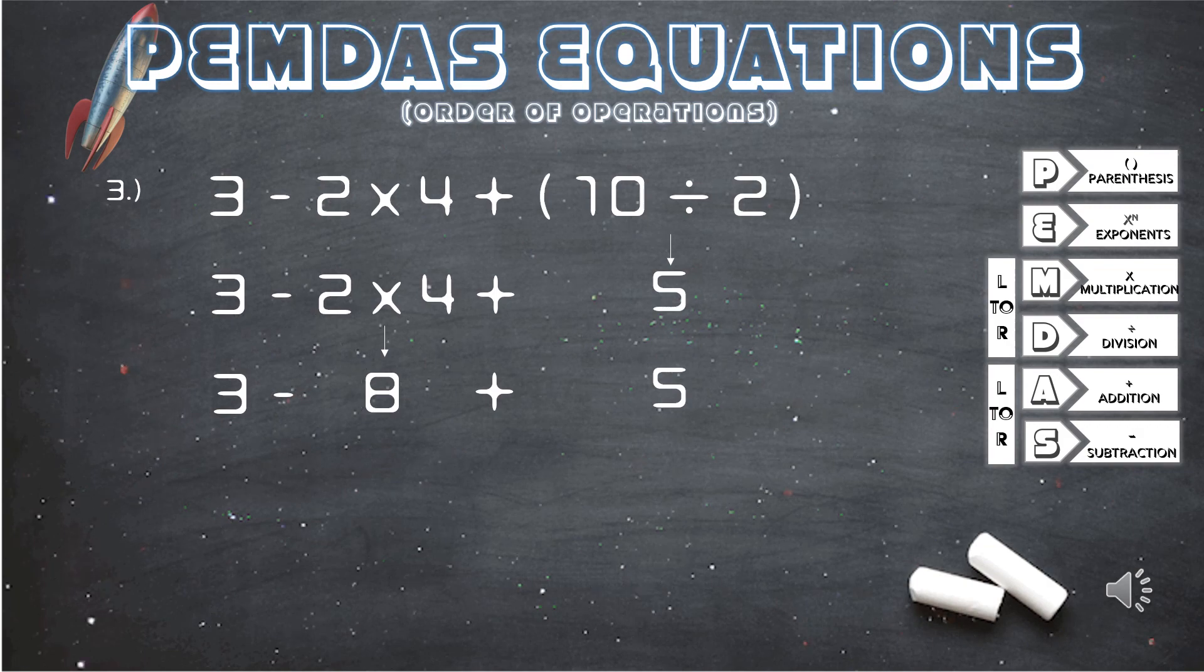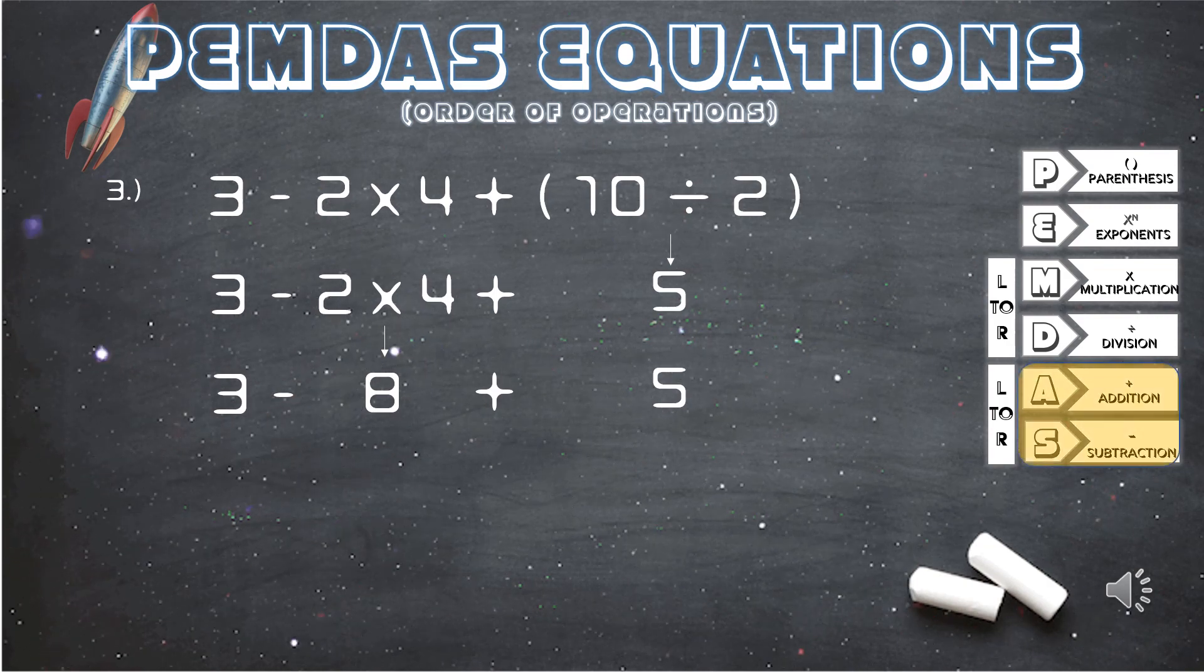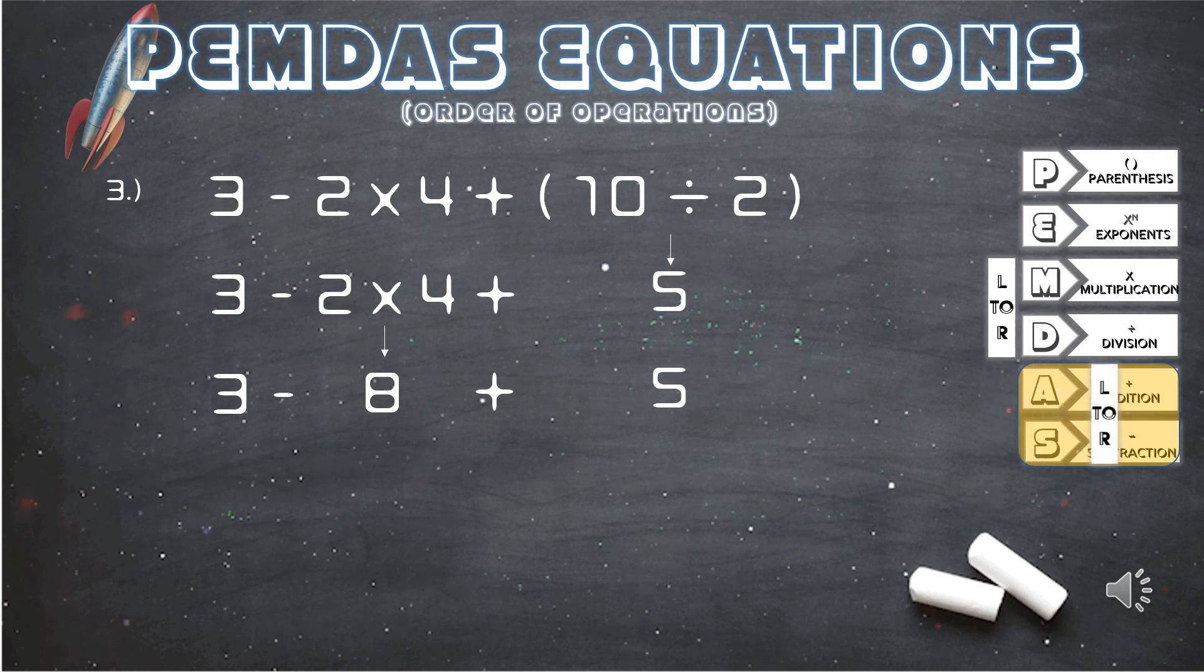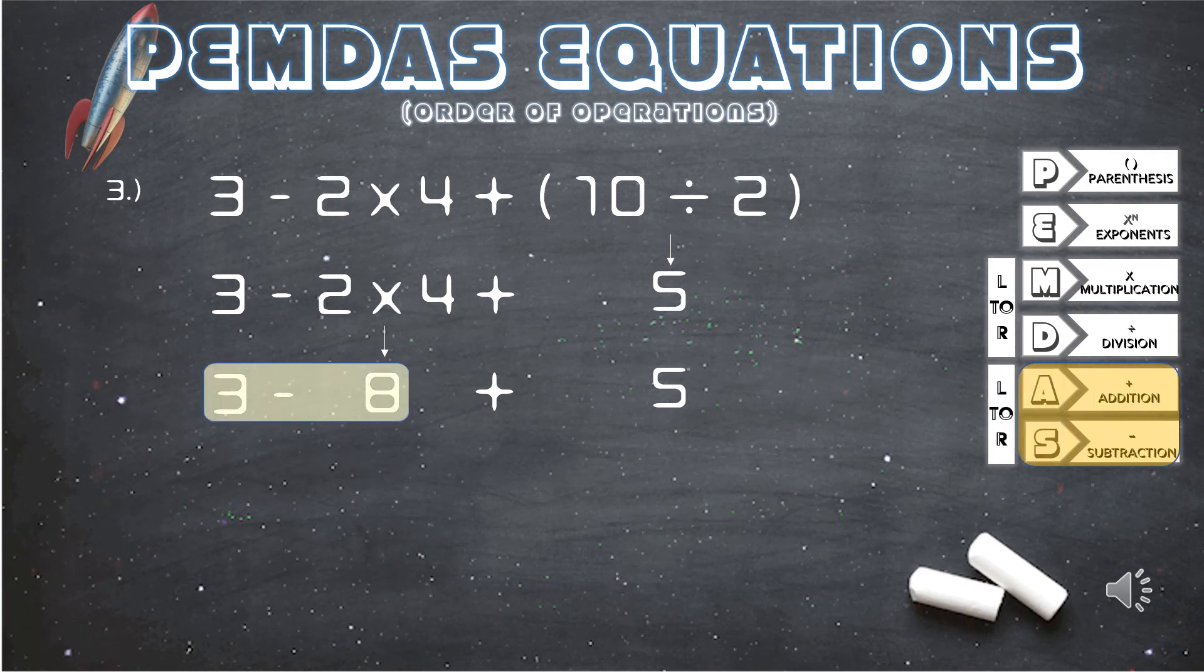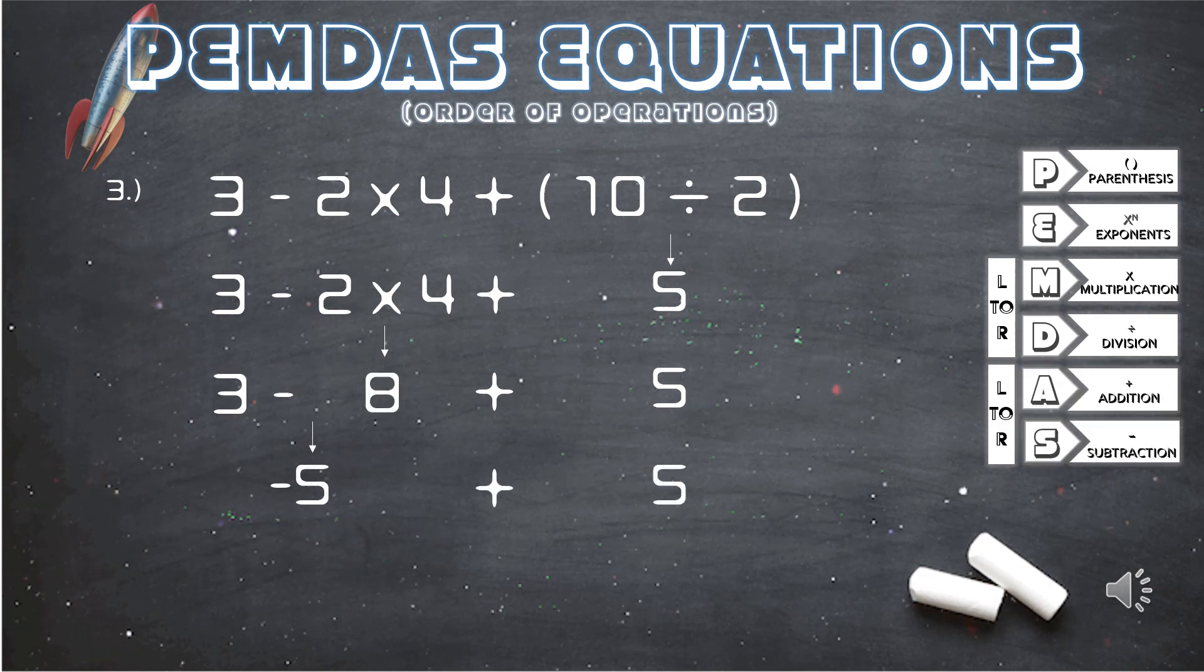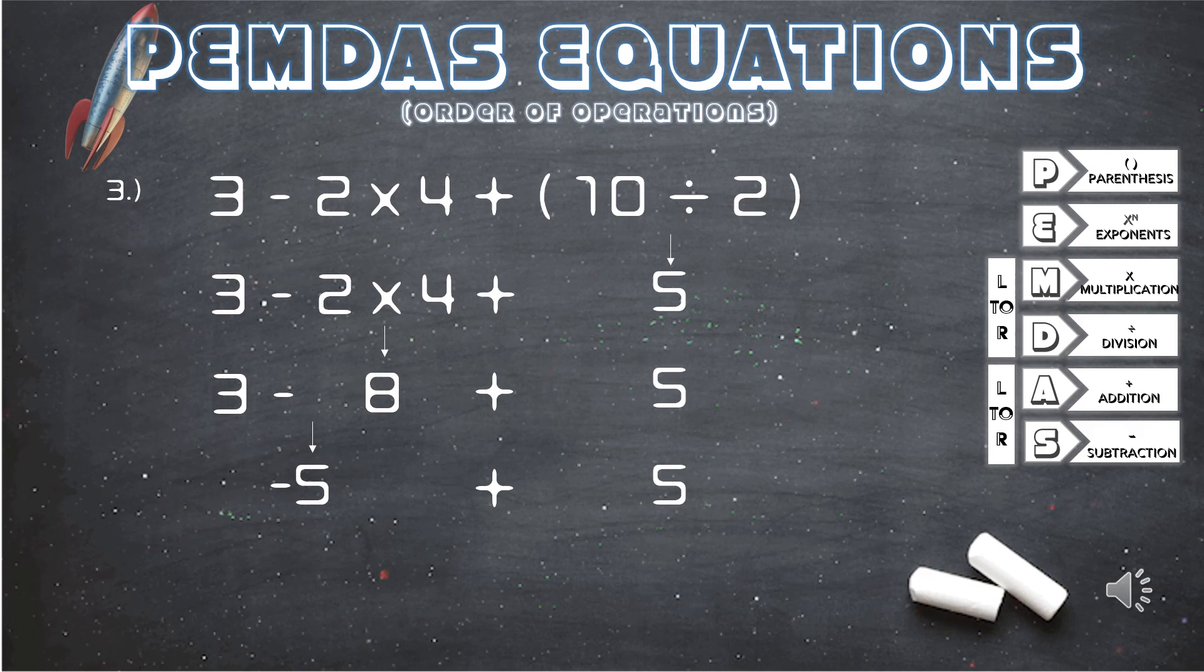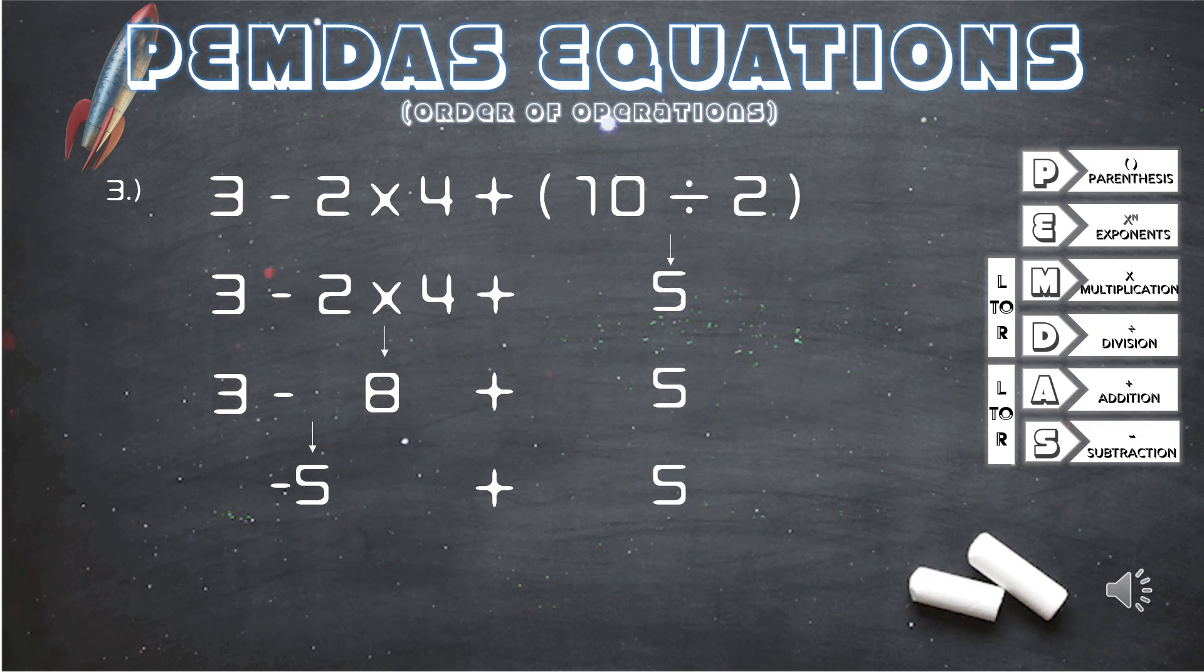We bring down the rest of the equation, and we are left with subtraction and addition. So now we will solve this from left to right. 3 minus 8 equals negative 5. We bring down the 5, and now we have negative 5 plus 5, giving us the answer 0.